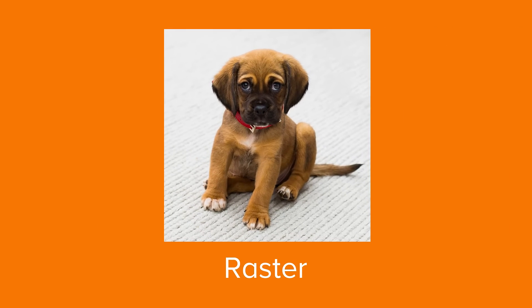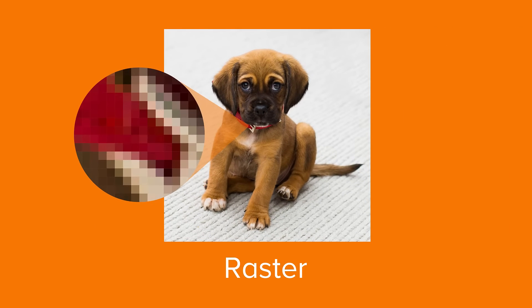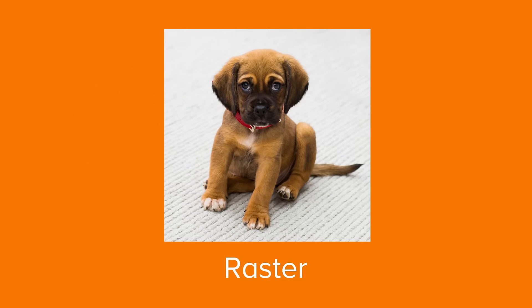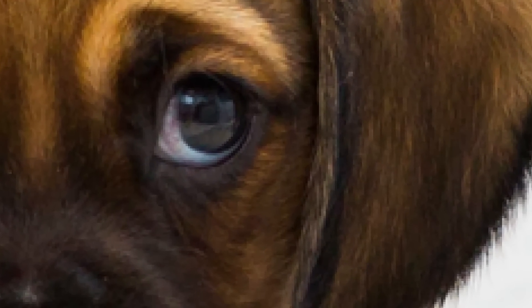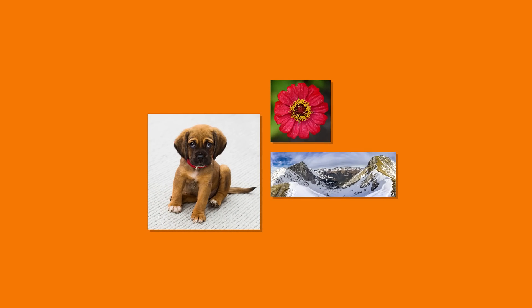Raster images, also known as bitmap images, are made up of a bunch of tiny pixels. From a distance, these pixels blend together to form a clear image. Raster images have no limit to how detailed or complex they can be. But as you begin to scale the image beyond its original size, you may notice a drop in quality. Photographs are the most common type of raster image.